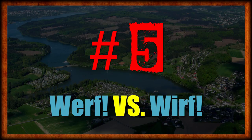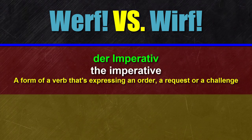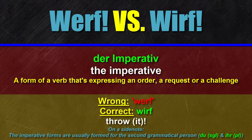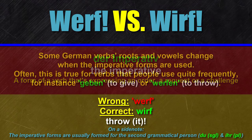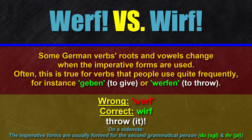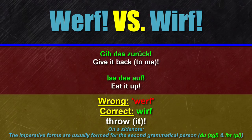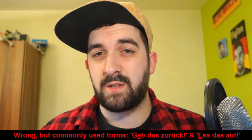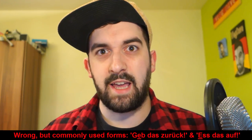And number five: werf versus wirf. These two words are just one example of many that all link to the same mistake. Werf with a German E is wrong. The correct imperative form is wirf — with the German I. Not all German verbs change their root vowel to an I in the imperative form der Imperativ, but some do, and it's often common terms people use regularly. Instead of the correct forms like 'gib das zurück' — give it back — or 'iss das auf' — eat it up — many Germans would rather say 'geb das zurück' or 'ess das auf.'